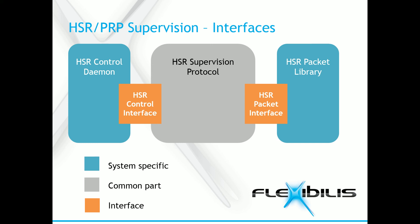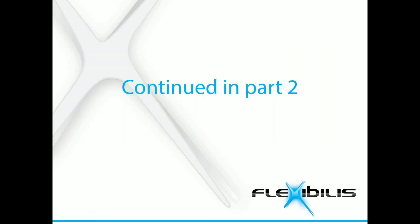The HSR PRP supervision protocol stack is generic and does not use operating system specific function calls, making it easily portable to other operating systems. However, the HSR packet library and the control daemon are operating system specific and need to be ported to the OS that is used. The reference design we provide is compatible with NIOS UC OS 2. This is the end of the first part — please continue to the second part, in which I will tell more about the precision time protocol and the PTP protocol stack. Thank you for watching.